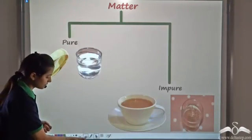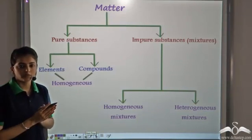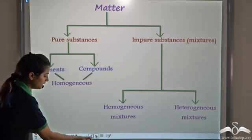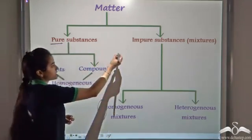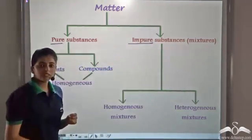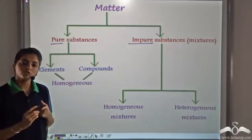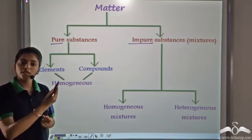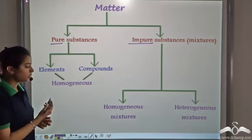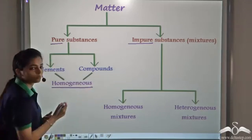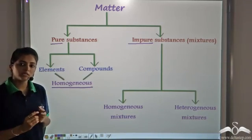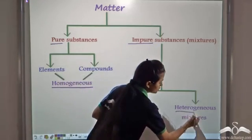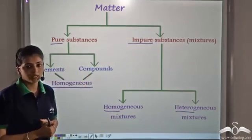Recollecting the classification of matter: we have two main categories — pure substances and impure substances. Impure substances are also known as mixtures. The pure substances are elements and compounds. Since they have the same composition throughout, pure substances are always homogeneous. But impure substances, as we have seen in different examples, can be homogeneous or heterogeneous.